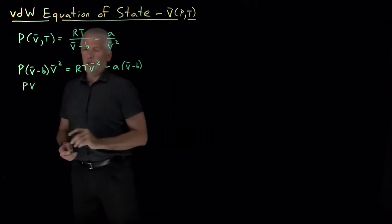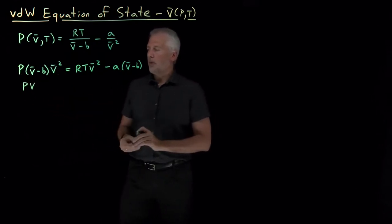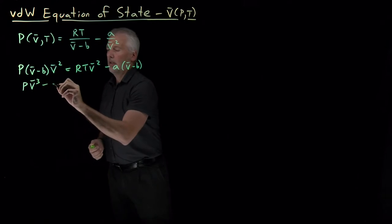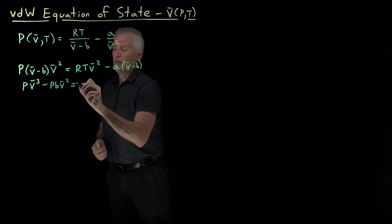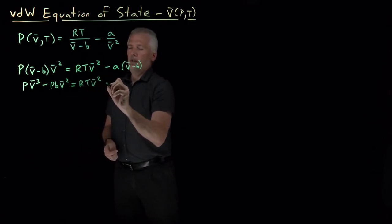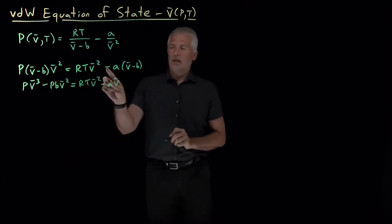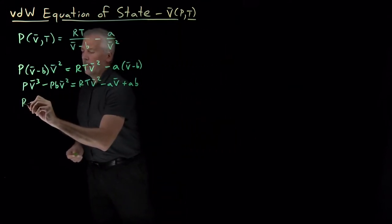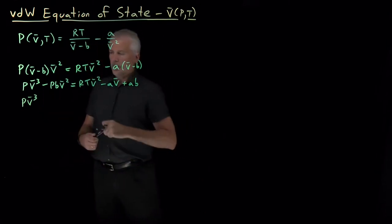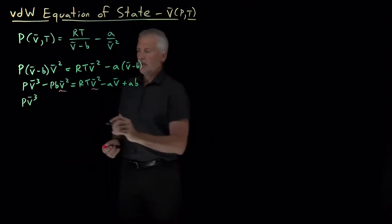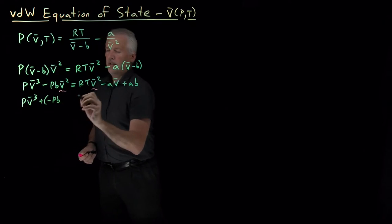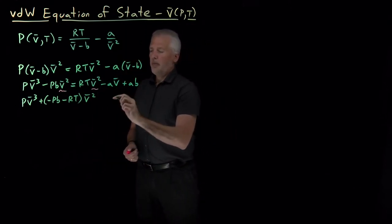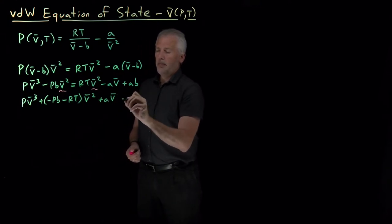Let me simplify this expression somewhat slowly so I don't make any algebra mistakes. I've got a PV̄ times V̄ squared, so altogether that's a PV̄ cubed, and I've also got a P minus b times V̄ squared. That's all equal to RT times V̄ squared minus aV̄ from those two terms, and then minus, or plus, a times b. If I collect all those terms on one side: PV̄ cubed, and both V̄ squared terms can be written as a minus PB, and when I bring the RT over, it becomes minus RT, both multiplying V̄ squared.